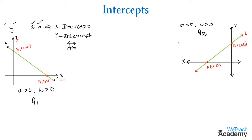And similarly for the condition where the x-intercept A is less than 0 and also B is less than 0, then this will be the position of the line in quadrant 3.